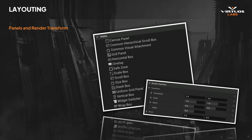Traditionally, when you are working with UI layout, you use panels and render transforms. Panels basically tell your widgets how to organize, and the render transform can scale, translate, or rotate your UI.